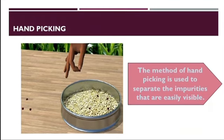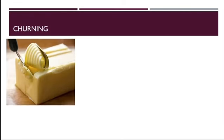The process of separating impurities from the wheat, rice and pulses that is visible. What can you see in this picture?